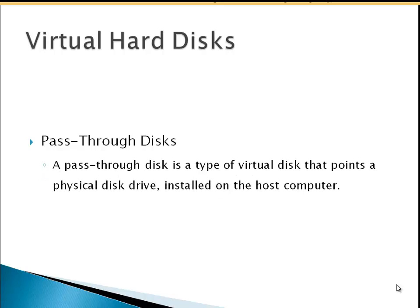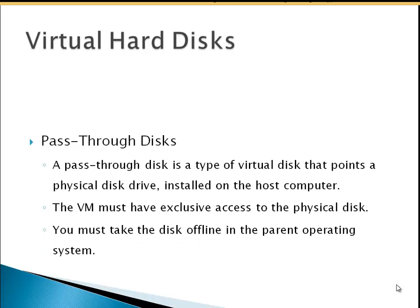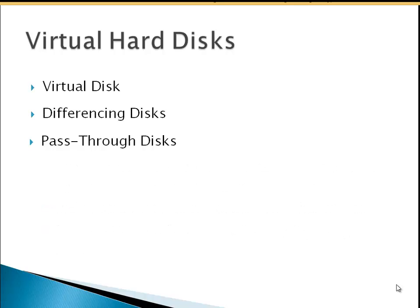A pass-through disk is a type of virtual disk that points to a physical disk drive installed on the host computer. The virtual machine must have exclusive access to the physical disk, and you must take the disk offline in the parent operating system. Pass-through disks are really fast. So the three virtual hard disk types are: virtual disks, differencing disks, and pass-through disks.